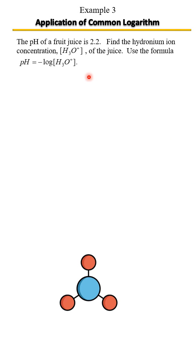The pH of a fruit juice is 2.2. Find the hydronium ion concentration of the juice. Use the formula here.